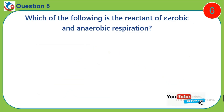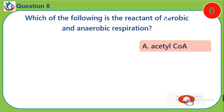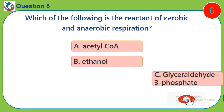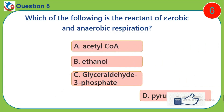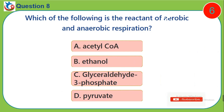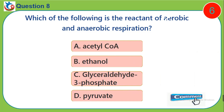Question 8. Which of the following is the reactant of aerobic and anaerobic respiration? A, acetyl-CoA. B, ethanol. C, glyceridehydryphosphate. D, pyruvate.